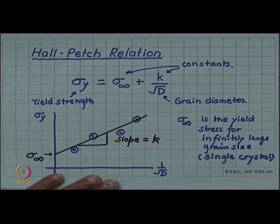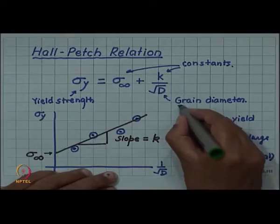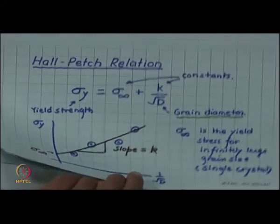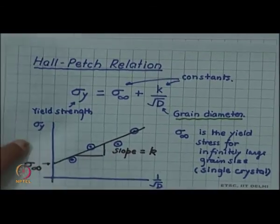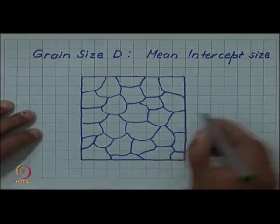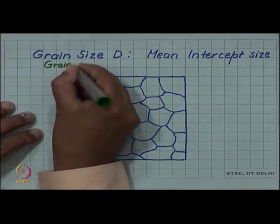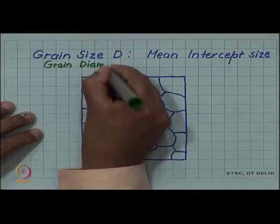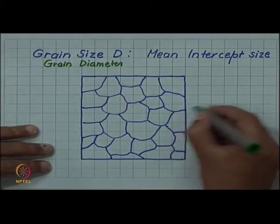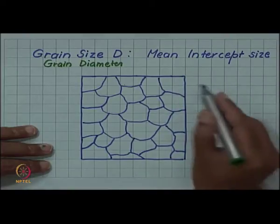But one point here is still not obvious, what do we mean by grain diameter, what is meant by grain diameter which we are plotting along the x axis. So let me try to make it little bit quantitative. So the way the grain size or grain diameter is measured, one way it is measured is what is called linear intercept method or mean intercept size.